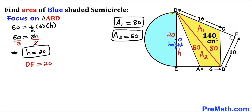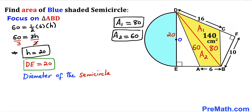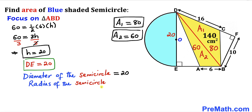So height DE turns out to be 20 centimeters, and we can see that DE represents the diameter of the semicircle. Therefore the diameter of this semicircle is 20 centimeters, and the radius r is half of that, which is 10 centimeters.